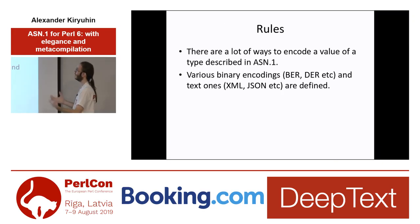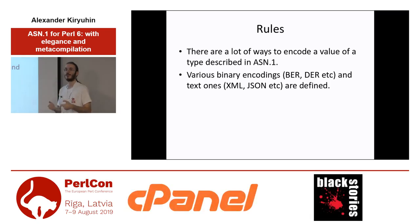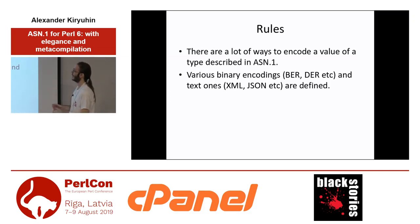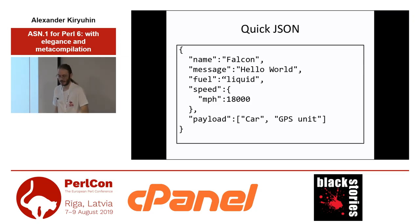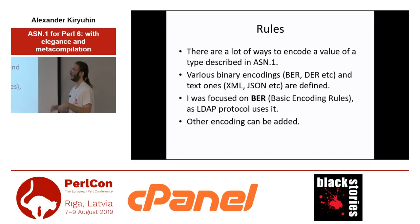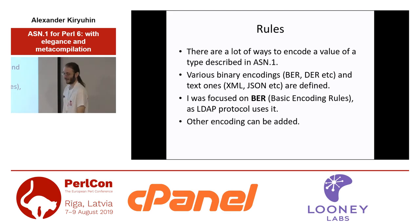There are different ways, not just those numbers I've shown. There are different sets of rules like BER — basic encoding rules — or DER. And there are text ones, for example. To relax a bit, you can look at this quick JSON, which specifies a value with name, with speed and so on. I was focused on basic encoding rules because I was implementing LDAP originally and LDAP uses it.